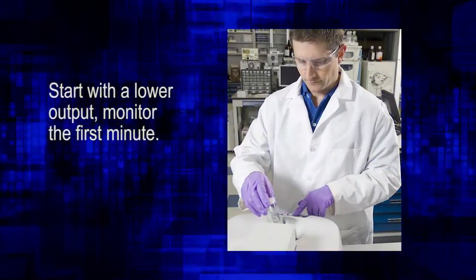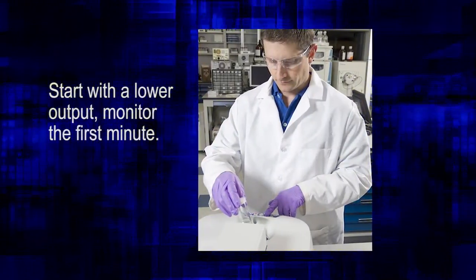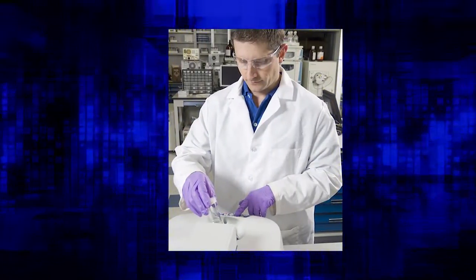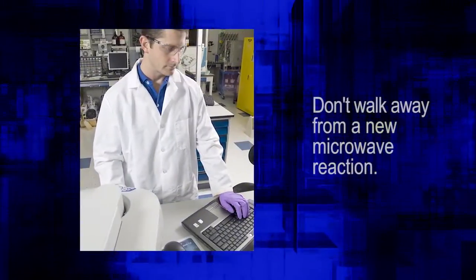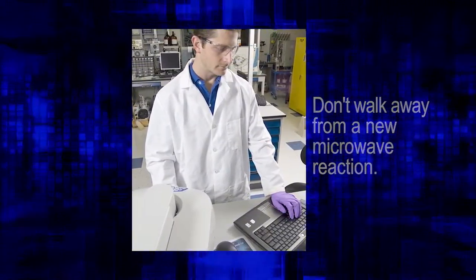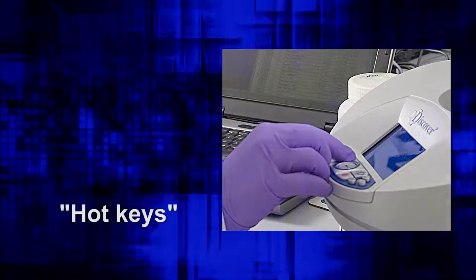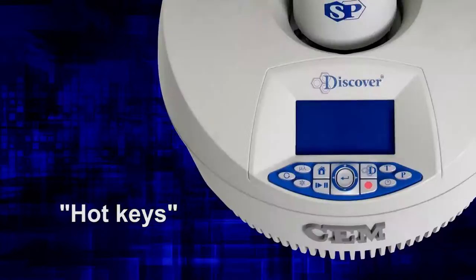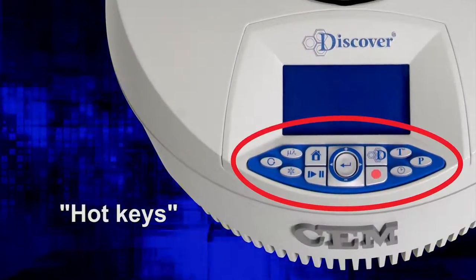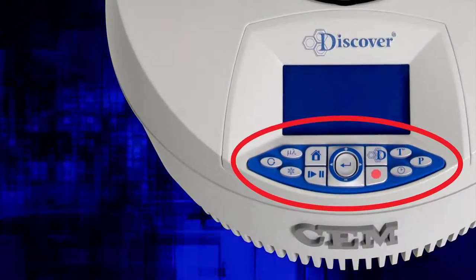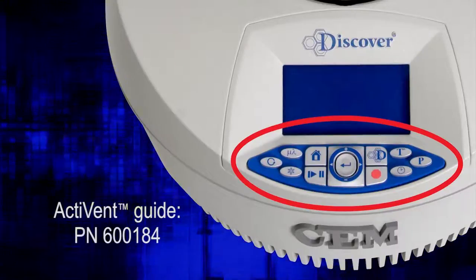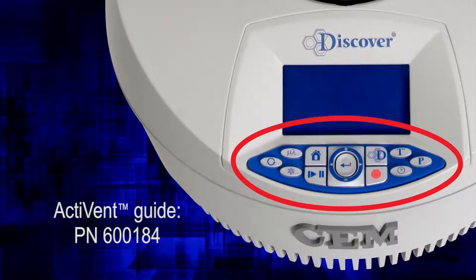So the cautious chemist will start with a low power input and monitor the first minute of the reaction. A good chemist wouldn't walk away from a new conventionally heated reaction, so don't do it with a microwave reaction. The Discover's patented hotkeys allow you to adjust reaction parameters during a run based on the reaction temperature ramp speed and any pressure that's generated. See the Activent guide for instructions on Activent programming.